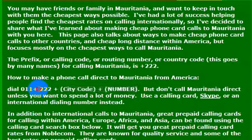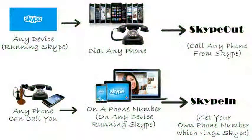The country code for Mauritania is 222, but I wouldn't really recommend calling direct — your phone company will charge you a lot of money. If you want to call a phone number, I really recommend using Skype. We detail how to make free and low-cost calls using Skype in other videos.